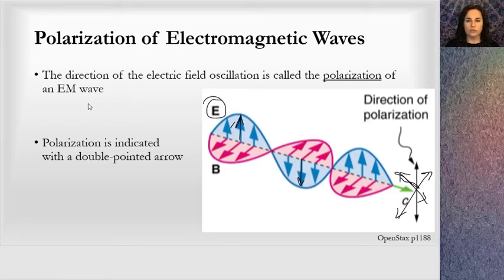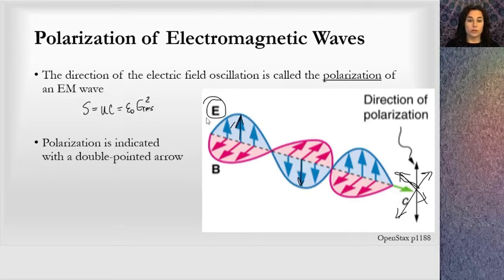The Poynting vector equals the energy density times the speed of light: epsilon naught times E_rms squared. So the intensity of light is related to the electric field, and we're going to remember that the electric field is related to the intensity.